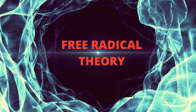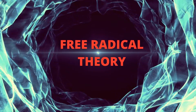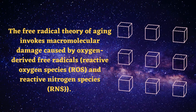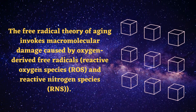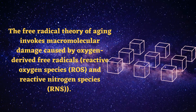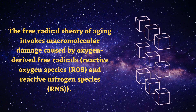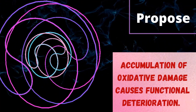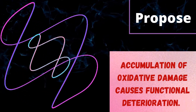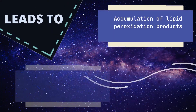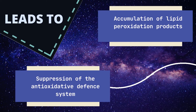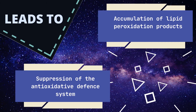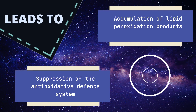Next is free radical theory. Research shows that free radical theory invokes macromolecular damage caused by oxygen-derived free radicals such as reactive oxygen species (ROS) and reactive nitrogen species (RNS). This theory proposes that accumulation of oxidative damage causes functional deterioration associated with aging. Eventually, these damages will lead to suppression of the anti-oxidative defense system and accumulation of lipid peroxidation products, both of which are responsible for redox signaling.